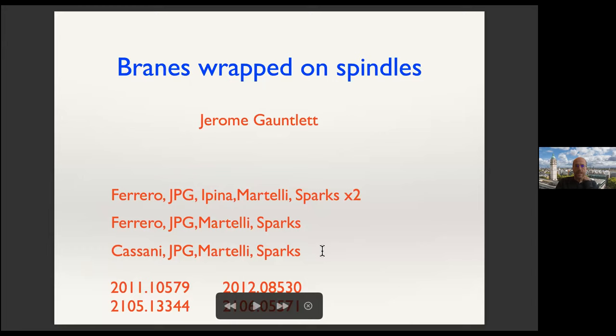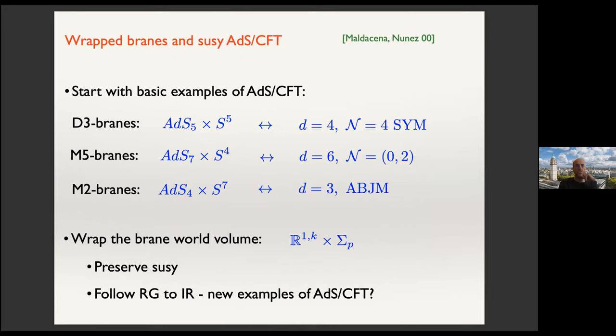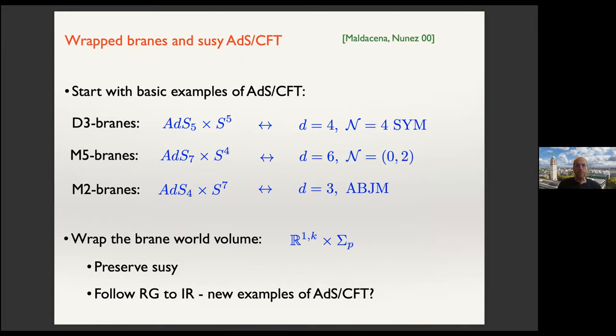Let me take you back a little bit and remind you of the very rich story concerning versions of the supersymmetric ADS-CFT correspondence associated with branes wrapping cycles. The basic examples, well known to everyone here: D3 branes associated with ADS5 cross S5, M5 branes with ADS7 cross S4, M2 branes with ADS4 cross S7, and these are dual to field theories on the right-hand side. They all have R-symmetries associated with the isometry group of the relevant sphere.